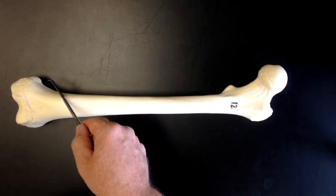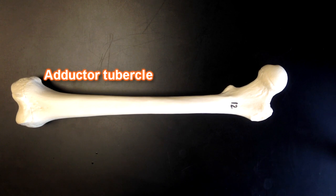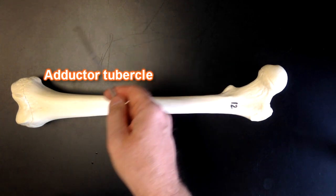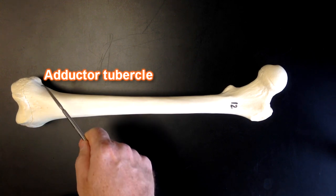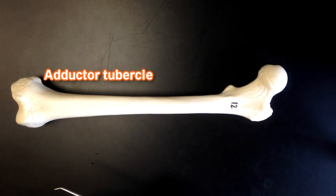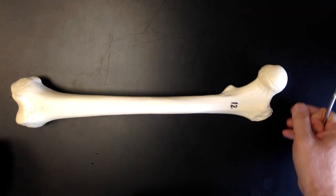Proximal to the medial epicondyle we have this bump right here. That bump that sticks out a little bit, that's known as the adductor tubercle and that's going to be one of the sites of attachment for the adductor magnus muscle right there. So those are the structures on the anterior surface of the femur.